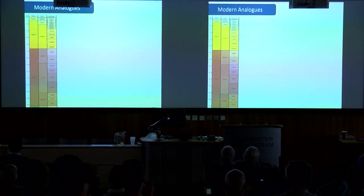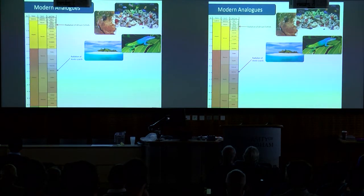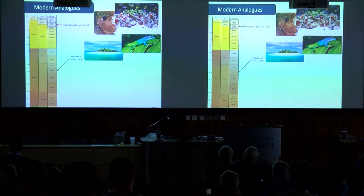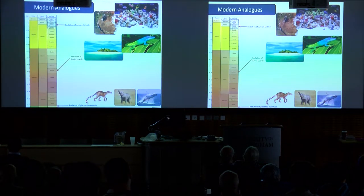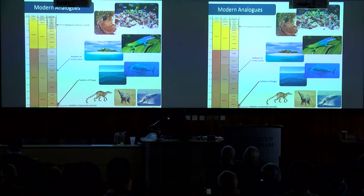So why are we interested in this group? Adaptive radiations in the modern are typically discussed in terms of cichlids or anolis lizards. These are nice in that they are very small scale, but that's also their problem — they tend to be restricted either to African rift lakes or to islands. If you look at adaptive radiations as they were originally defined, you have mammals, which are widely distributed on a large temporal and spatial scale. Pelagia makes a nice study system because they are also quite old.